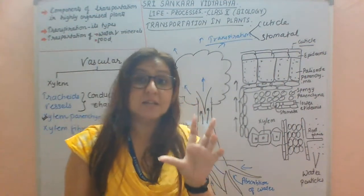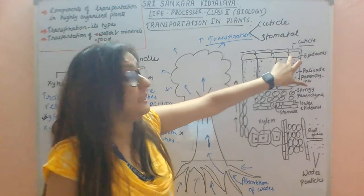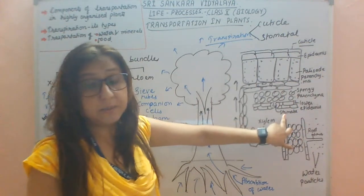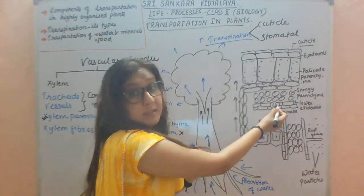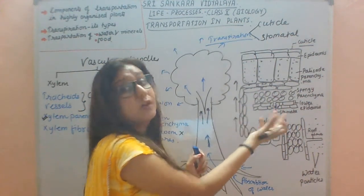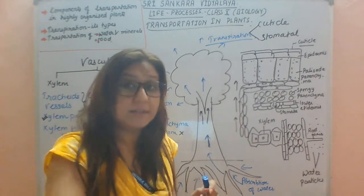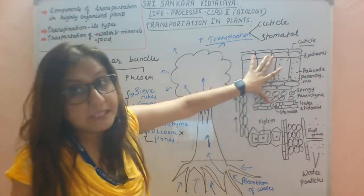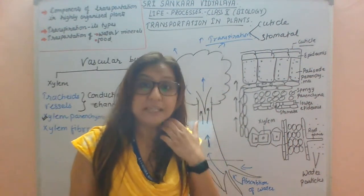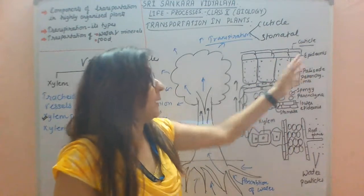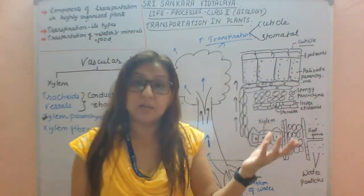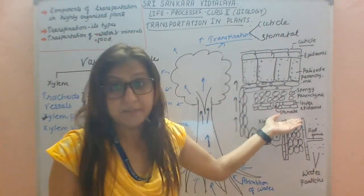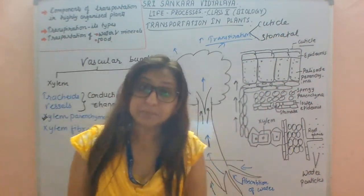When we studied the internal structure of a leaf, the cuticle is present in the upper epidermis and the stomata are present in the lower epidermis. The opening and closing of stomata is regulated by the guard cell. So through the upper epidermis, transpiration occurs via the cuticle — called cuticular transpiration. And if transpiration occurs through the lower epidermis where the stomata are present, that is called stomatal transpiration.